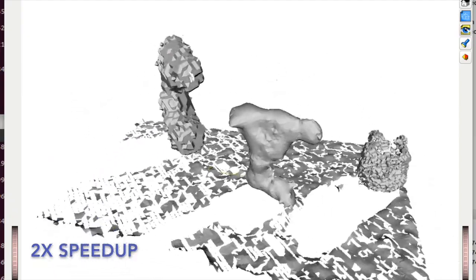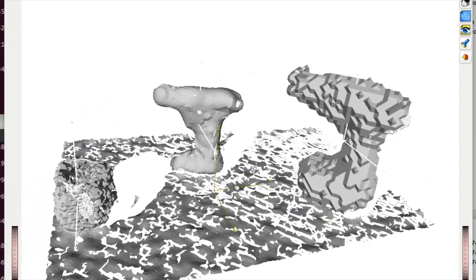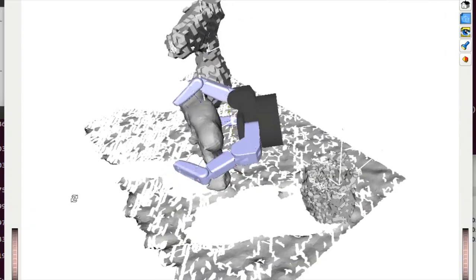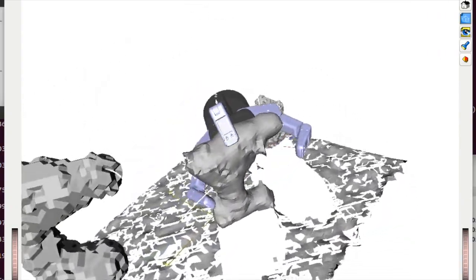Once the objects have been completed, a target object is selected and Grasp It's simulated annealing planner is run with the contact potential quality.